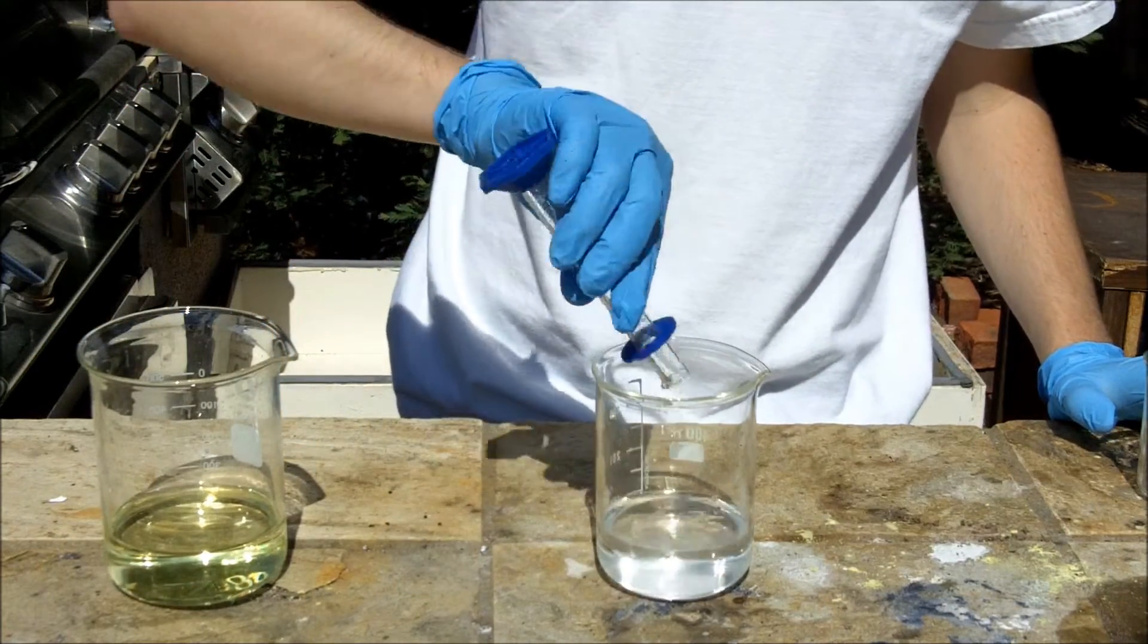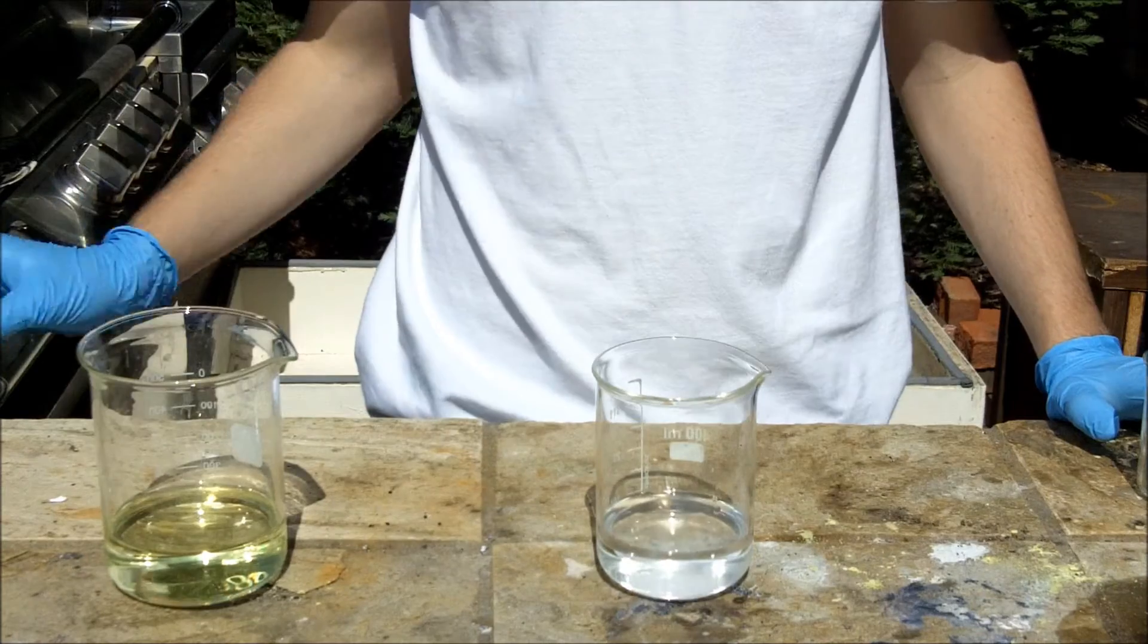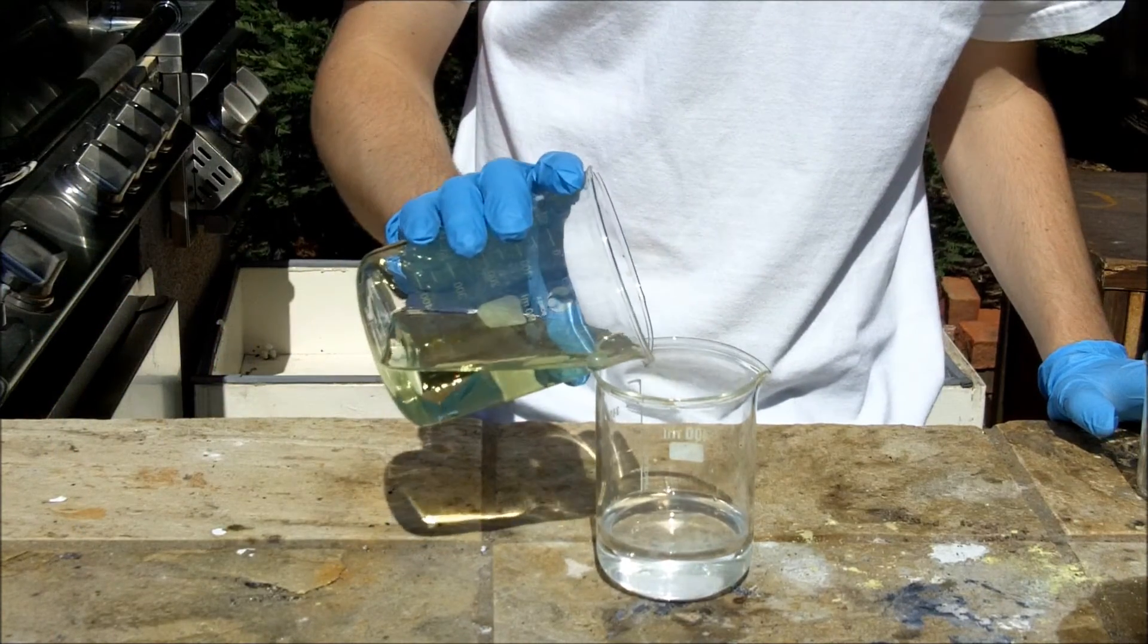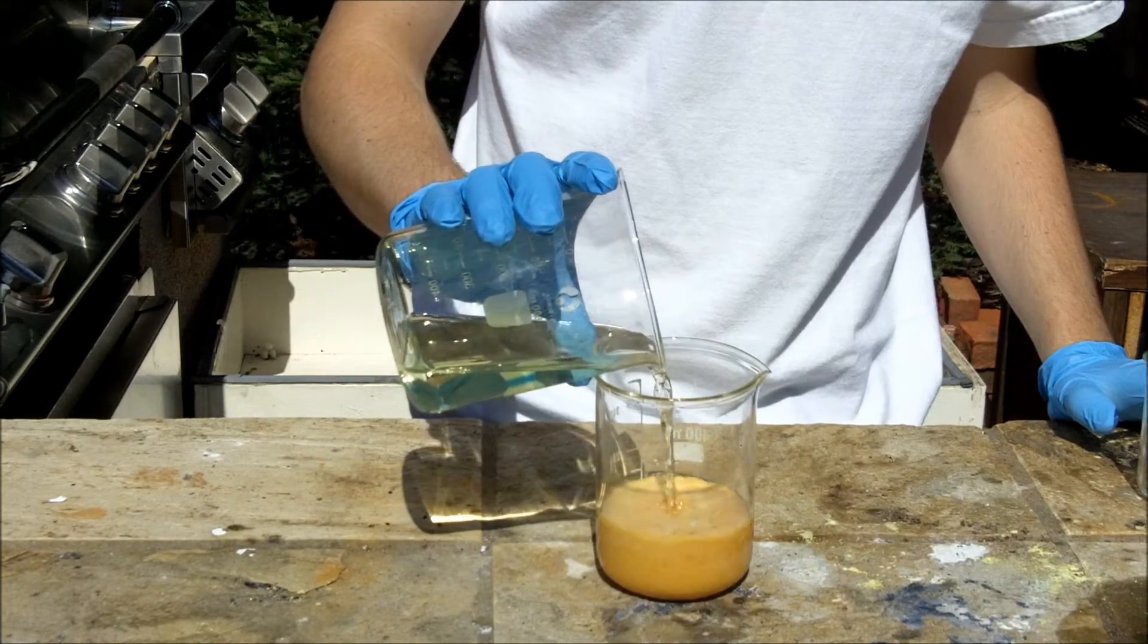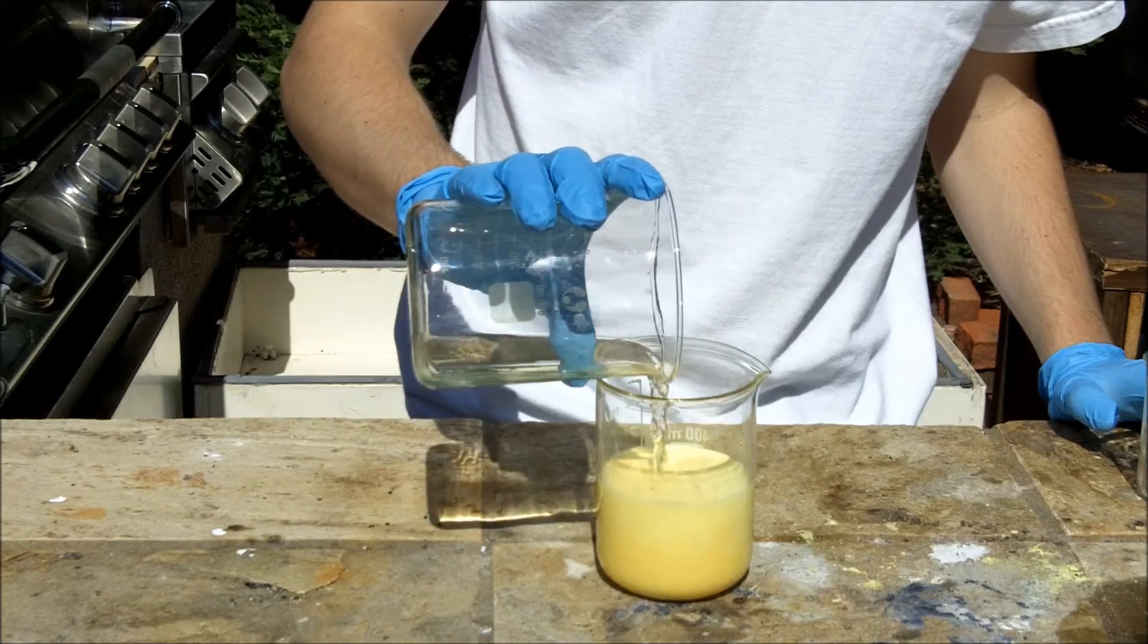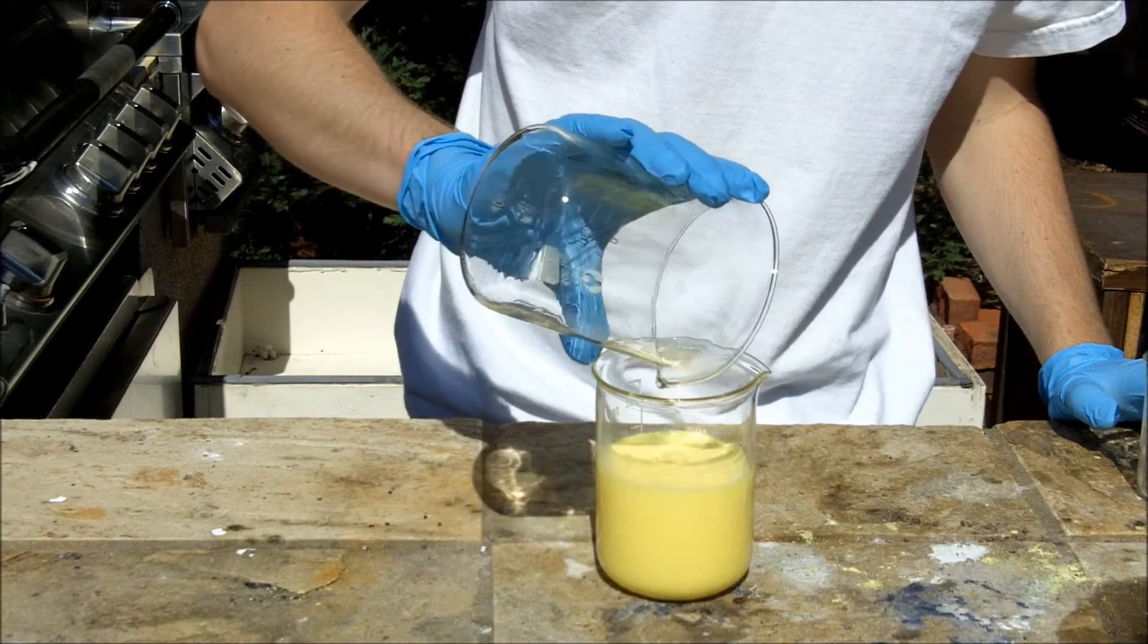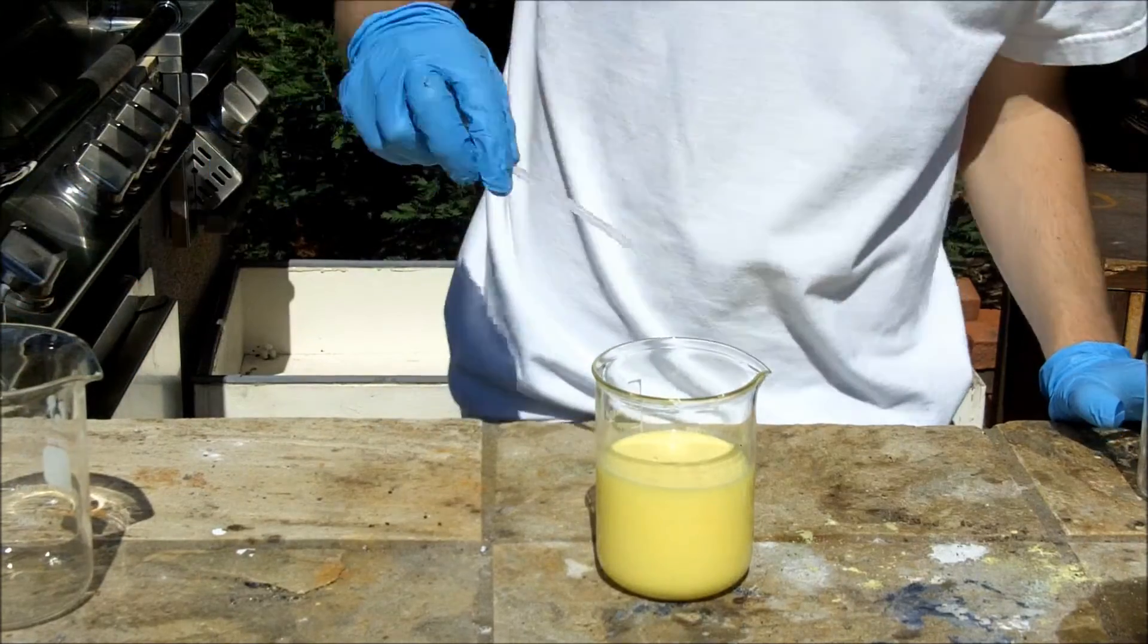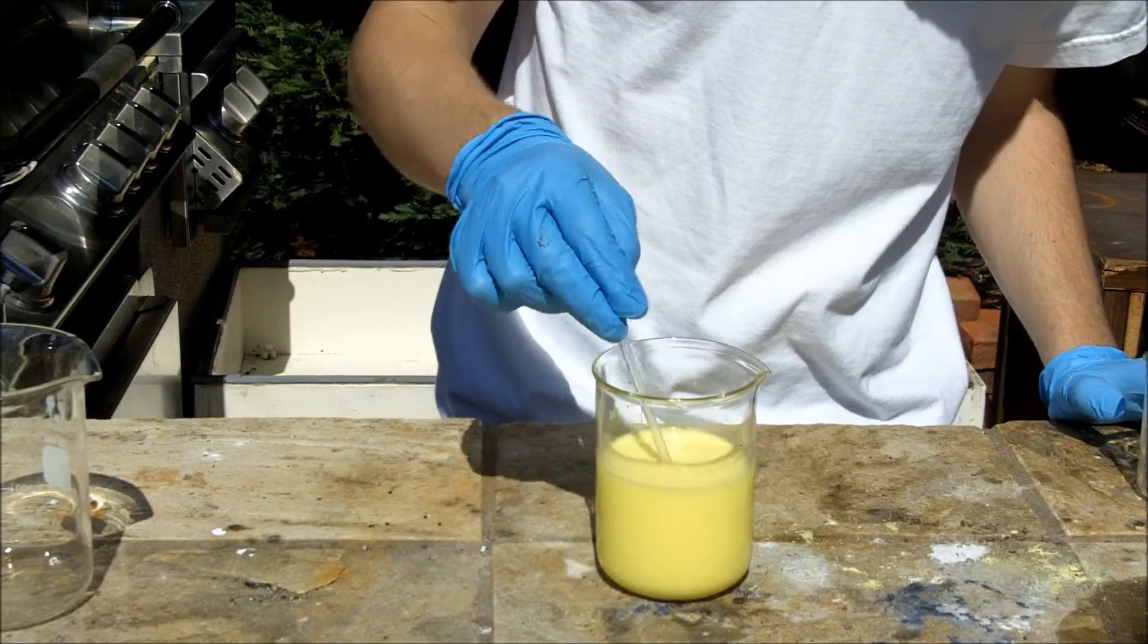In with the acetone. And now with the bleach. And we get a nice color change there. You can definitely see the color of iodoform.